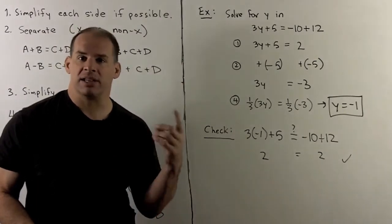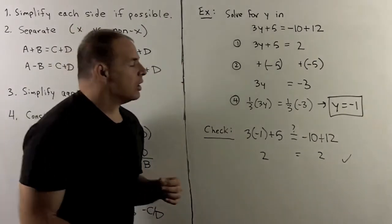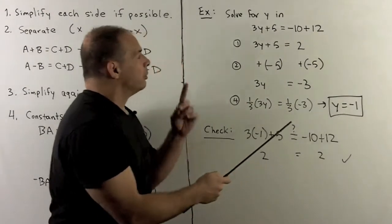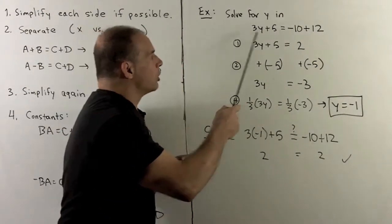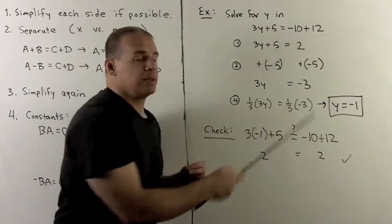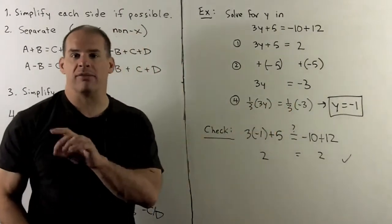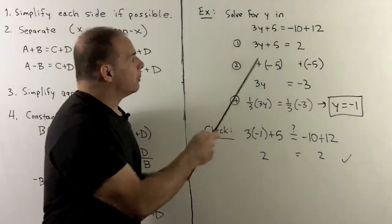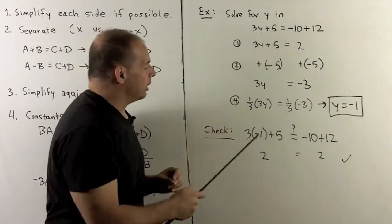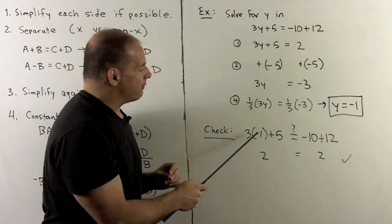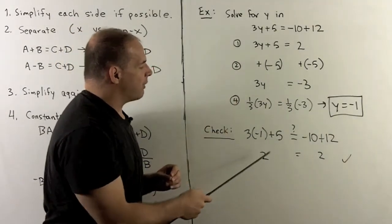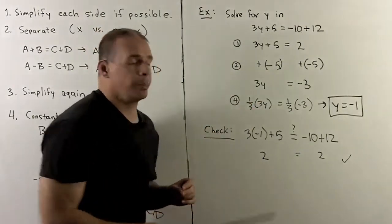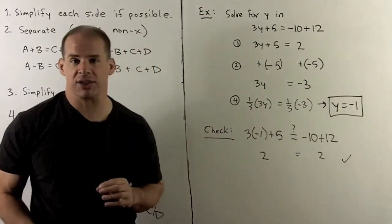In this case, it makes sense to check. I'll take y = -1 and put that into the original equation to make sure we haven't made any errors. If I put minus 1 in, we have minus 3 plus 5, which is 2. On the other side, I also have 2, so that checks out.